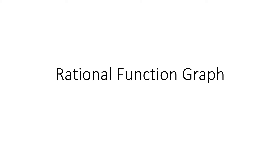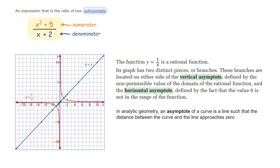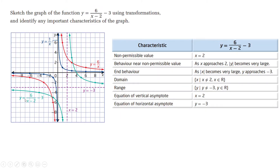In today's video I will talk about rational functions and their graphs. A rational function is the ratio of two polynomials — the numerator and denominator should both be polynomials. In grade 11 we learned the simplest rational function, y = 1/x, and we learned about vertical and horizontal asymptotes. An asymptote is a line such that the distance between the curve and the line approaches zero. Here, the x-axis is the horizontal asymptote and the y-axis is the vertical asymptote.